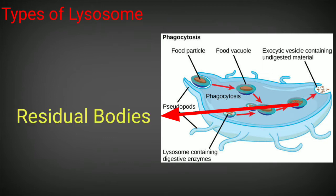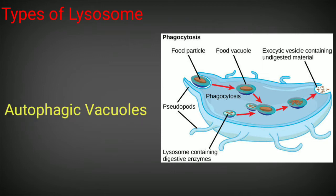As the lysosome matures, there are lysosomes that store indigestible food material left within the cell. Such lysosomes are called residual bodies - another type of lysosome that stores indigested food material within the cell. The last type is called autophagic vacuoles, produced by the fusion of a number of primary lysosomes around worn-out or degenerated intracellular organelles.